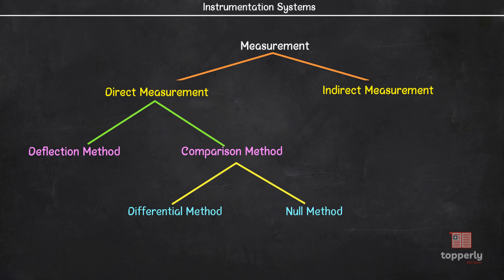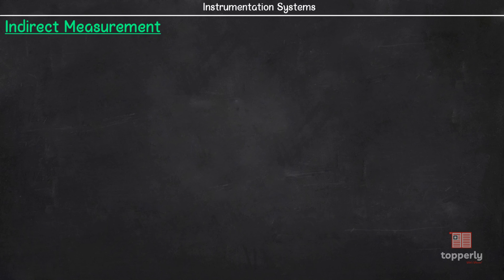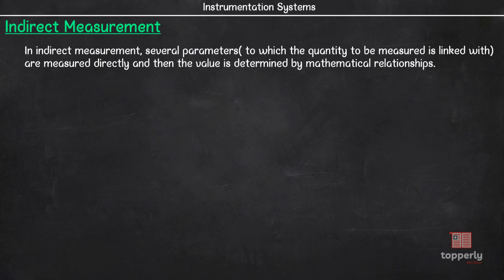So far we discussed all the methods of measurement that comes under the direct measurement. Now we have the indirect measurement. This method is used in places where direct measurement of the unknown quantity is not possible. Here, several parameters of the unknown quantity are measured directly and then the value is determined using mathematical relations. In other words, we are indirectly measuring the quantity. An example is the measurement of resistance of a conductor.